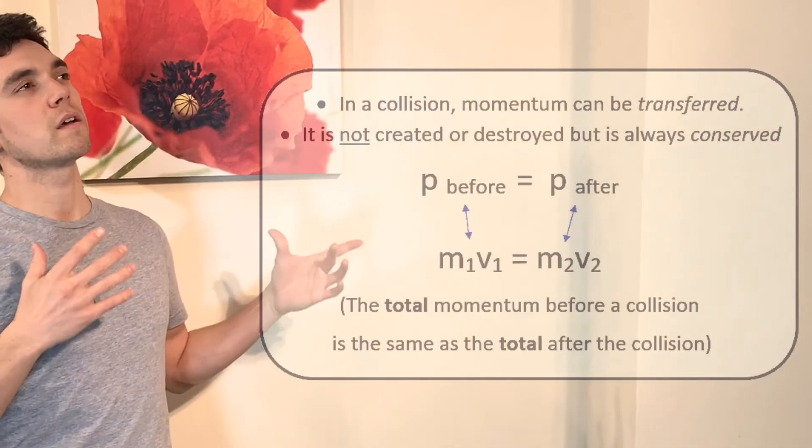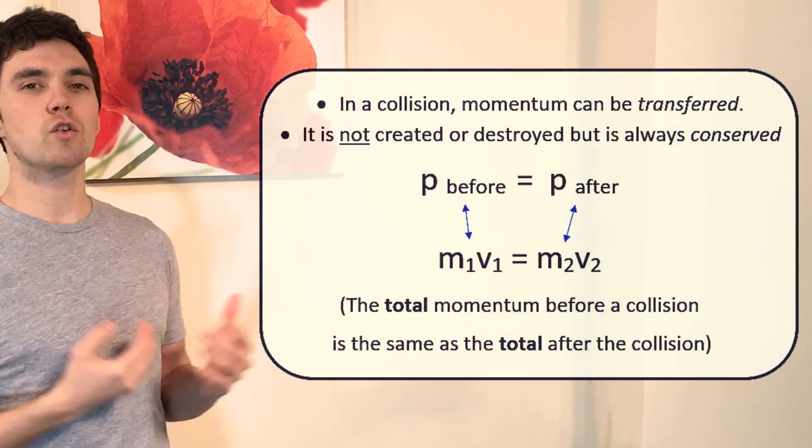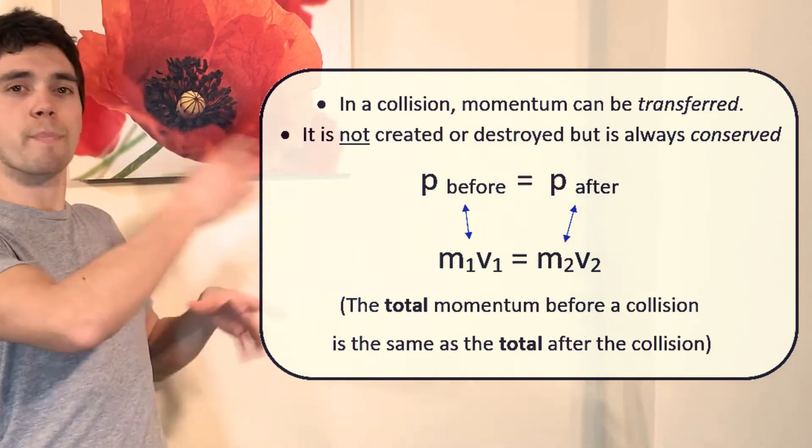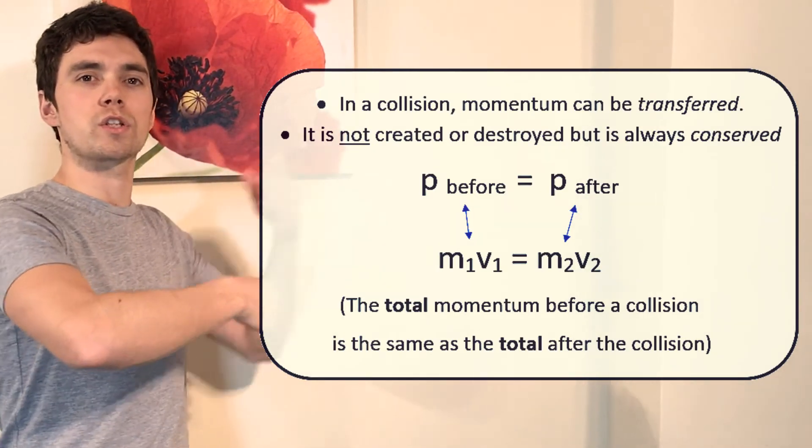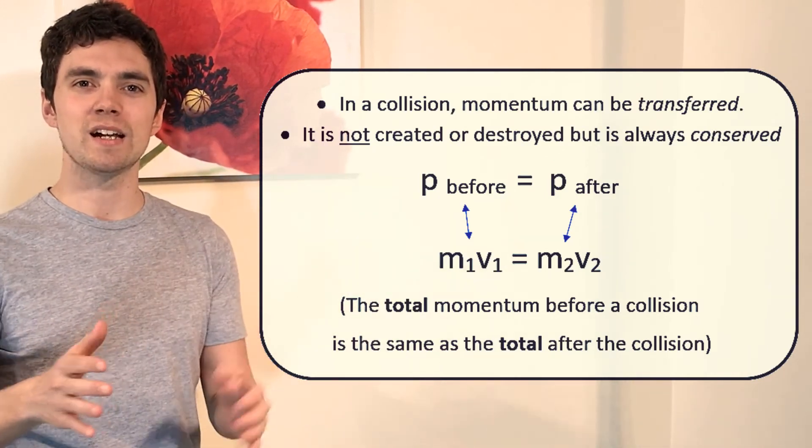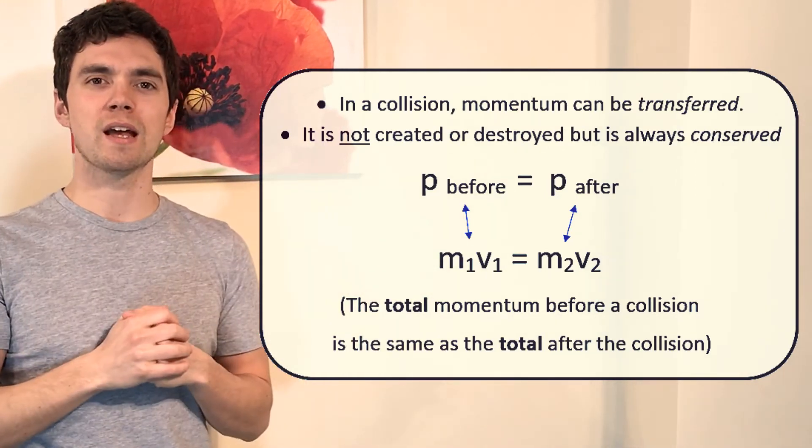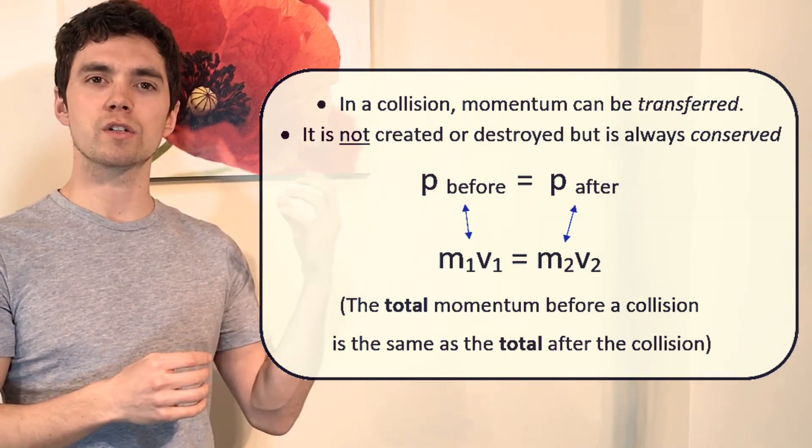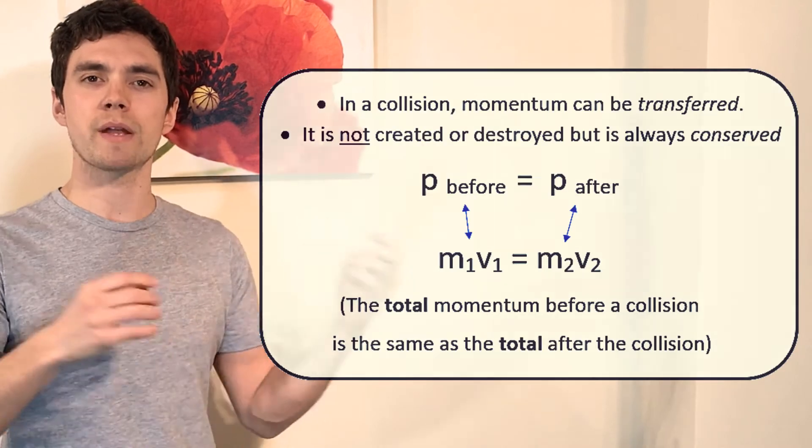You cannot create or destroy momentum. In the event of a collision, the momentum before the collision is always equal to the momentum after the collision. So if two things collide - a big thing hits a small thing - then that small thing is now going to have taken some of that momentum from the large thing.